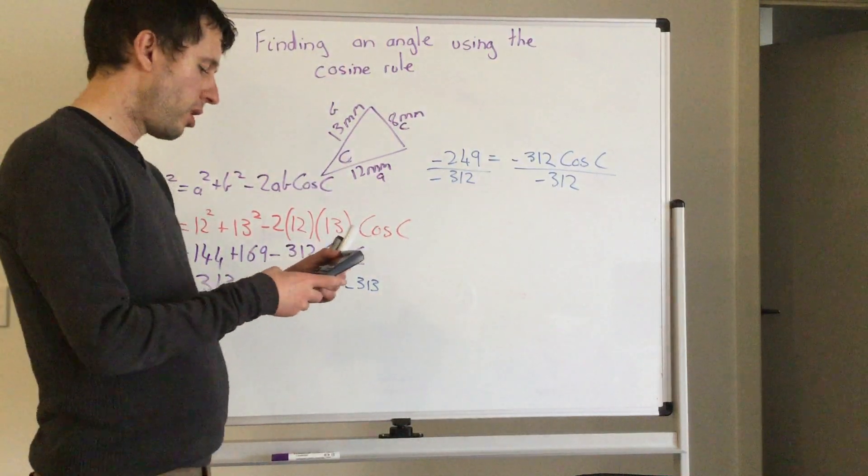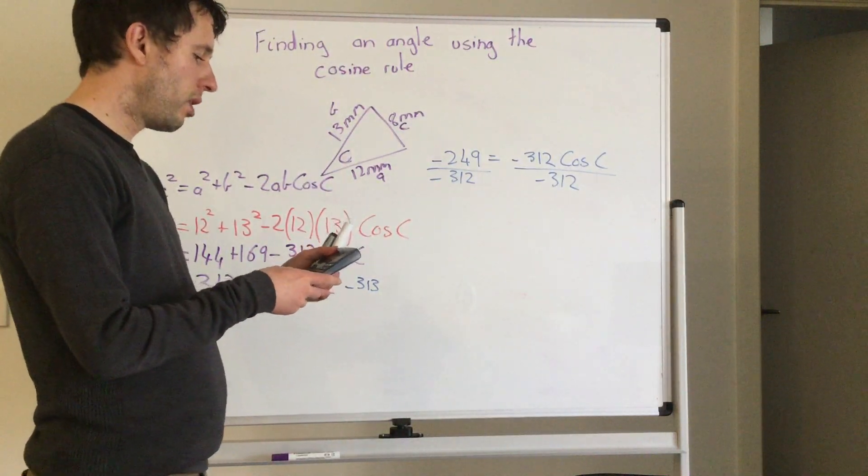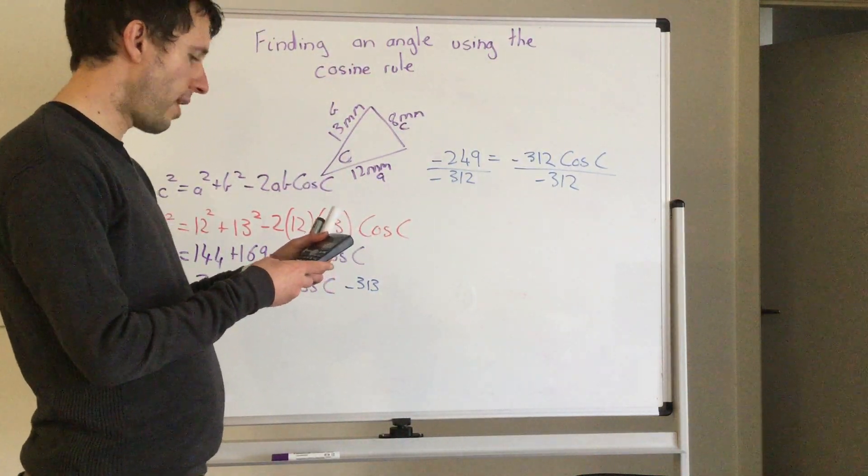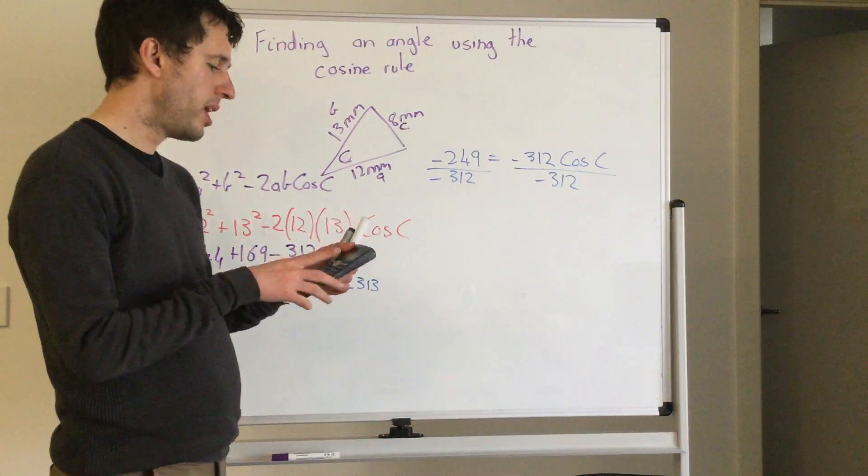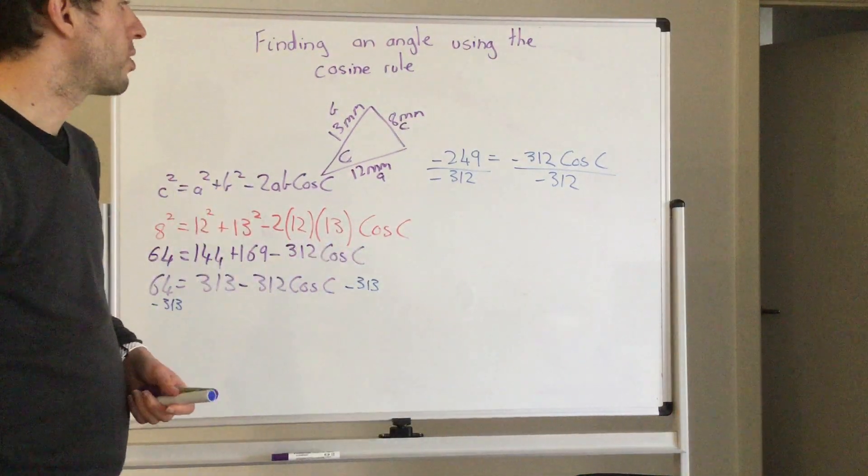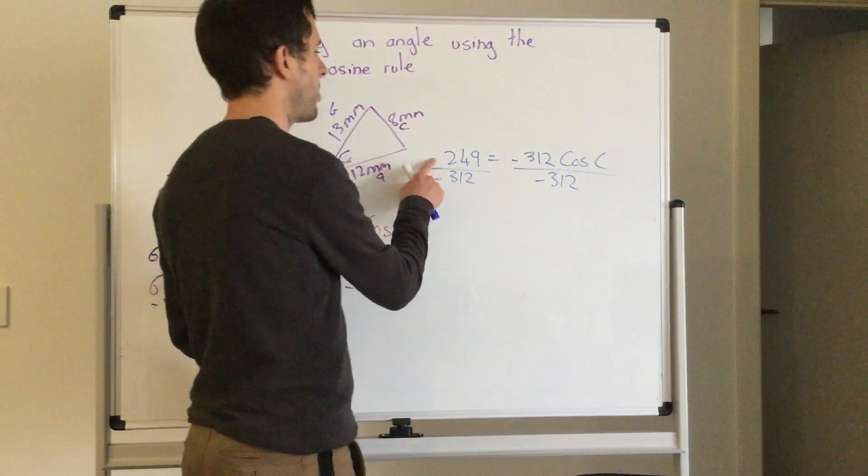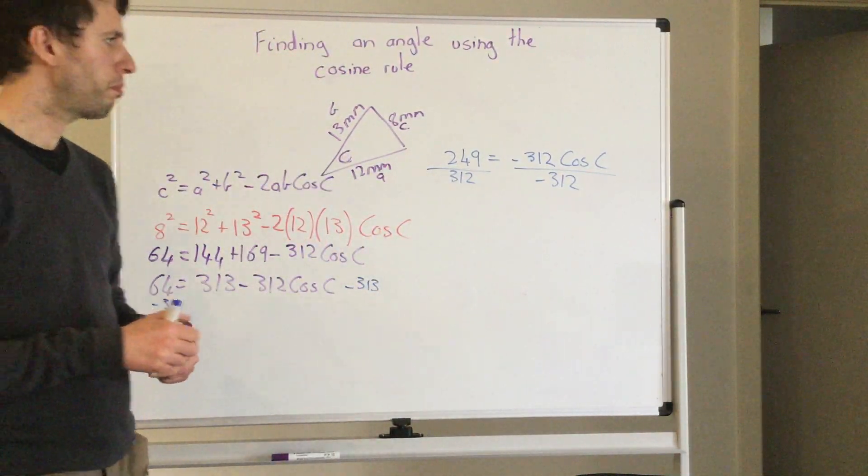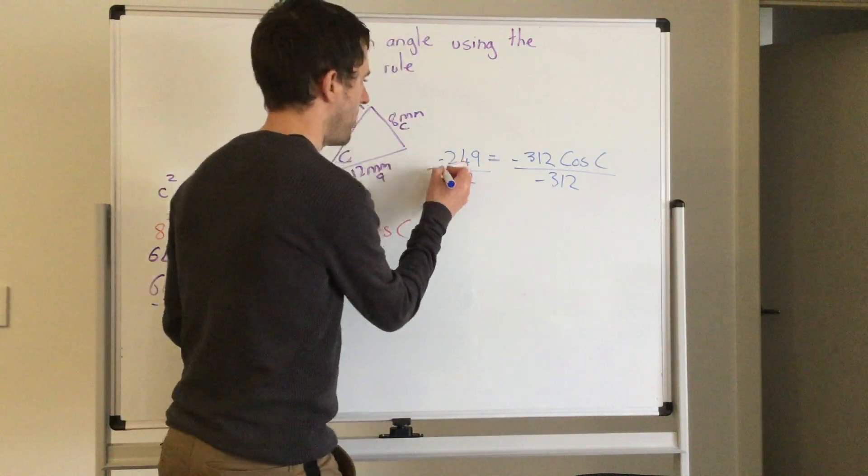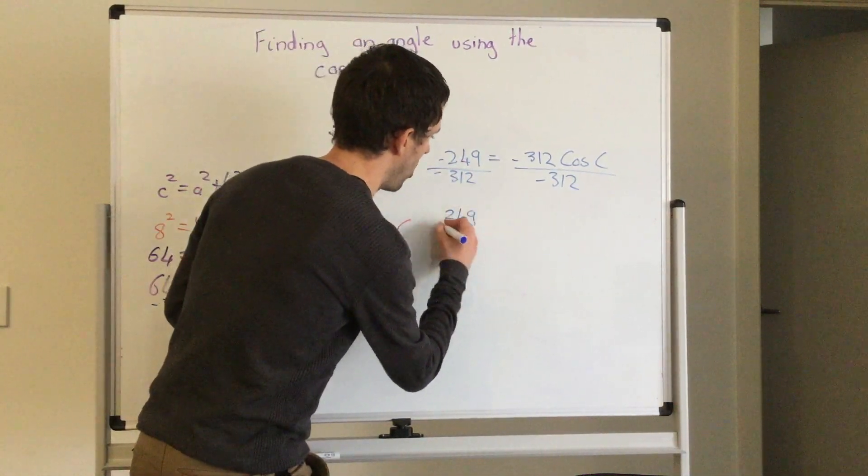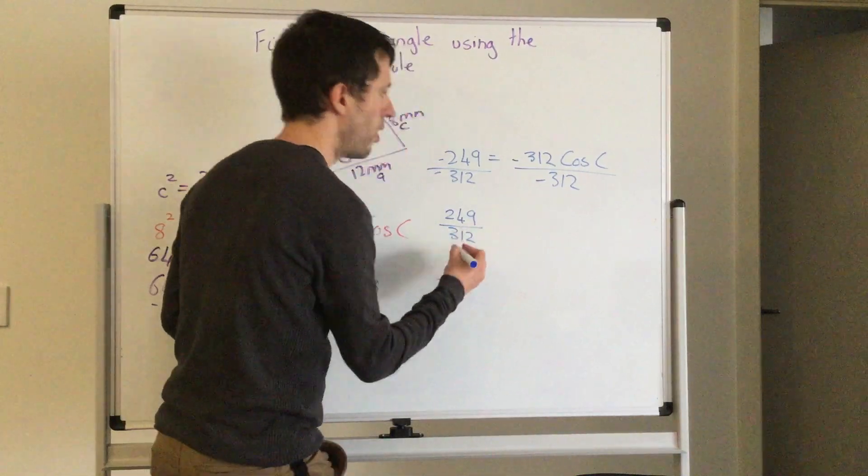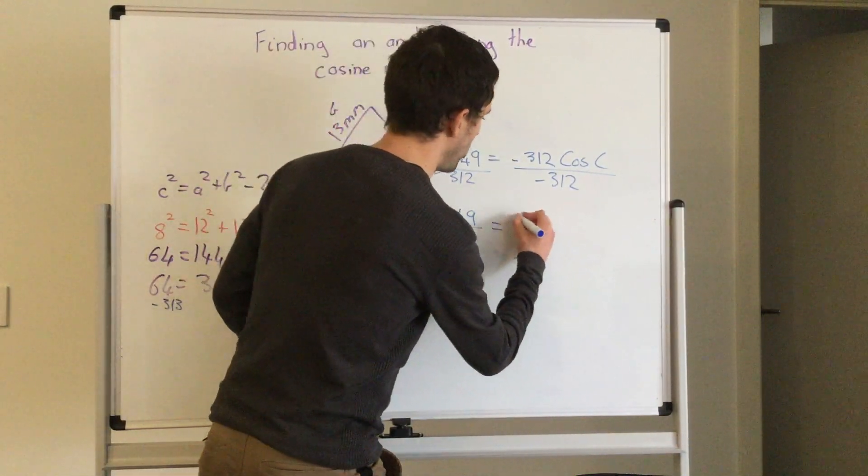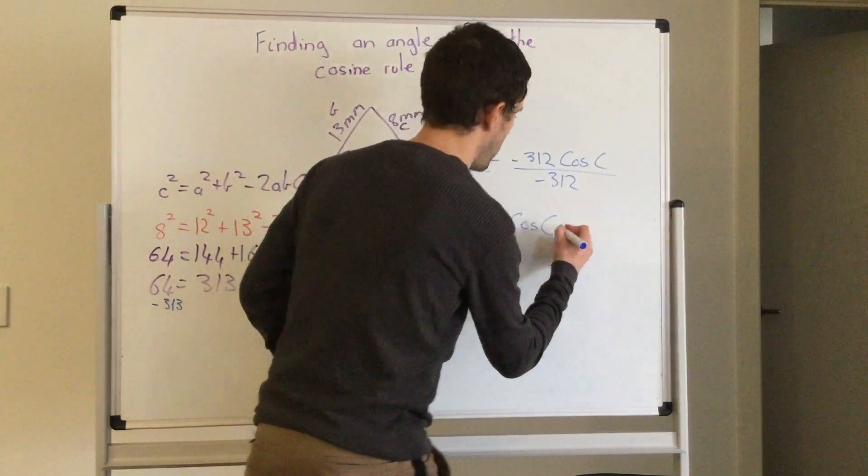So negative and negative is a positive. 249 divided by 312 gives me a massive big decimal, so I'll leave it like that but I'll just take the decimals, take the negative signs away. So I can rewrite that now: 249 over 312 is equal to cos c.